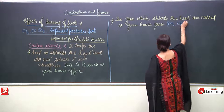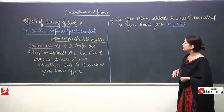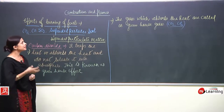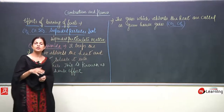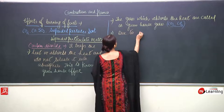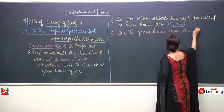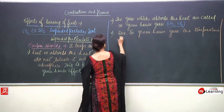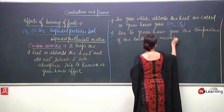Carbon dioxide and methane are the major greenhouse gases. When these gases absorb the heat and do not release it into the atmosphere — when they trap the heat on the surface of the earth — due to greenhouse gases, the temperature of the earth gets increased.